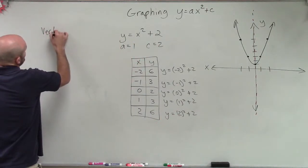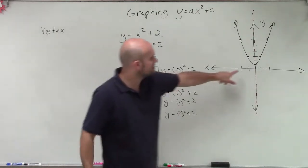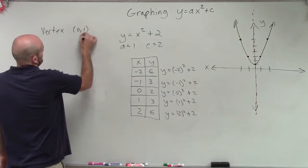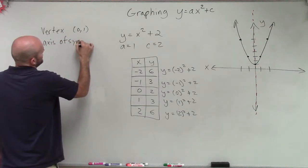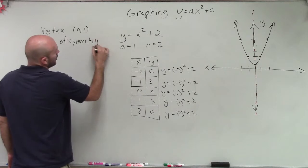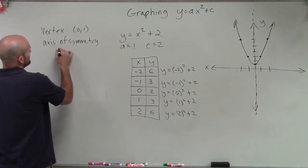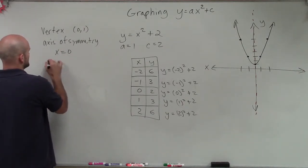So when I want you to label the vertex, what I want to do is I want to label that exact point. And we can see the vertex is the point at 0, 2. The axis of symmetry, which we've already talked about, for all quadratics that are in the form of ax² + c is going to be x equals 0. It's a vertical line in the form of x equals 0.